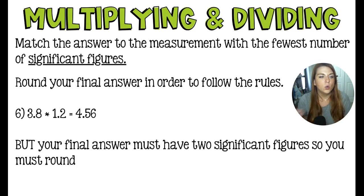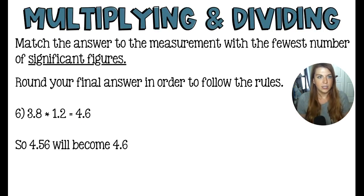And typically, you are going to do the entire question and then the final answer is what gets rounded. So when you do the math for 3.8 times 1.2, you get 4.56, which has three significant figures. So we're going to have to round this 4.56 so that we get two sig figs. So the 6 is big enough to kick the 5 up, which is going to give us 4.6 as the final answer.